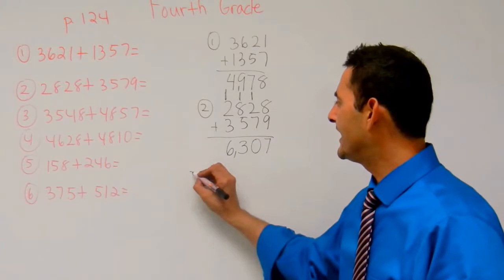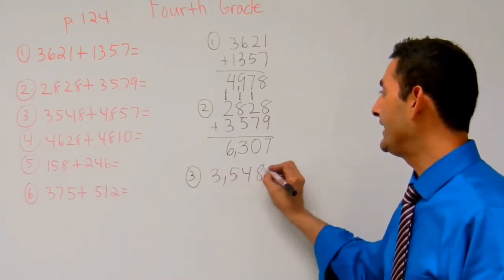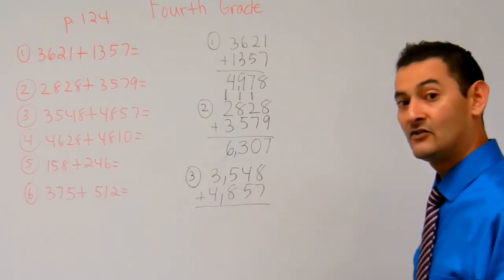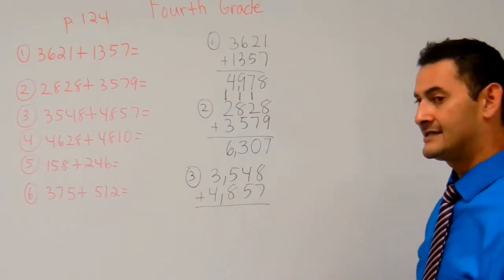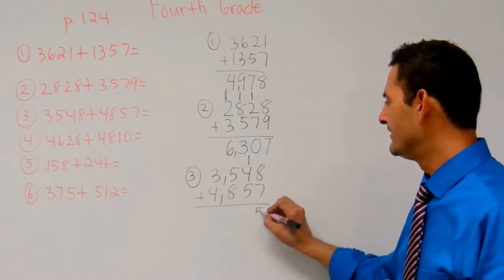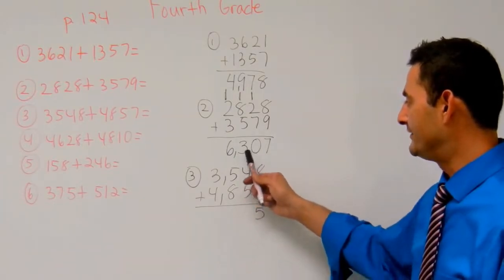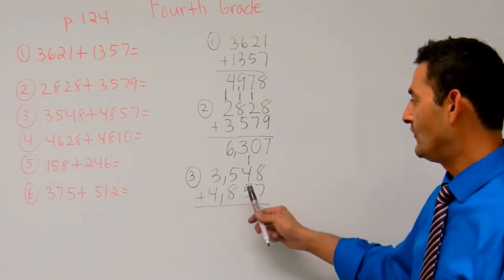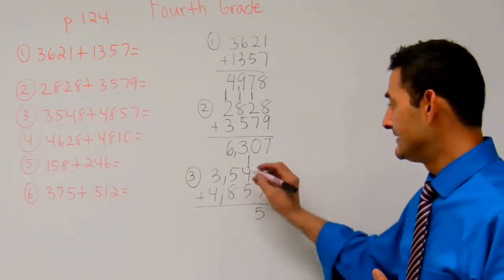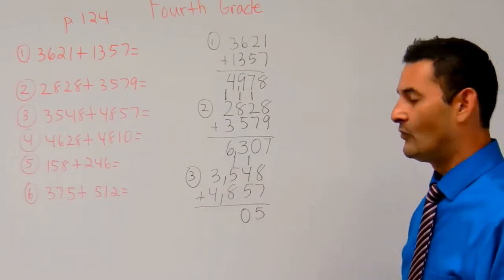Now let's take a look at number 3. Number 3 is 3,548 plus 4,857. Let's go ahead and add this with the standard algorithm. 8 plus 7 is 15 1's, so I'm going to put 1 ten there and 5 1's there. Now I've got 5 plus 4 plus 1 in the 10's column. 5 plus 4 is 9, plus 1 more is 10. I've got 10 10's, and 10 10's is going to be 100. I'm going to leave that 0 there and put 1 hundred there.